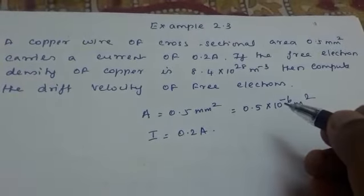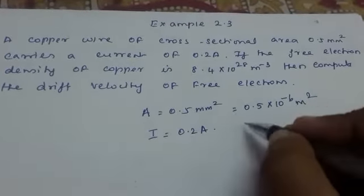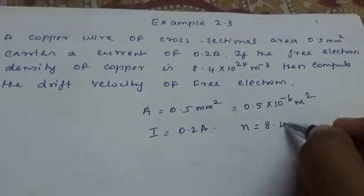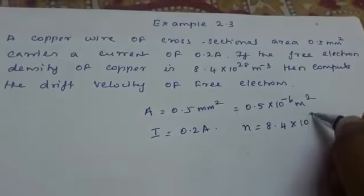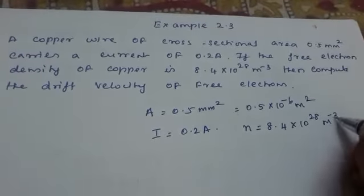Another given value is the free electron density of copper. The number of electrons n equals 8.4 × 10²⁸ m⁻³.